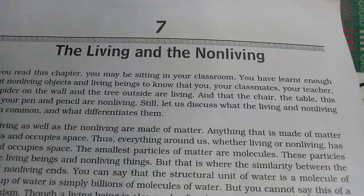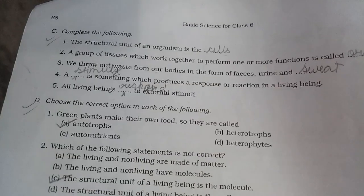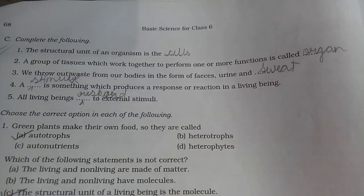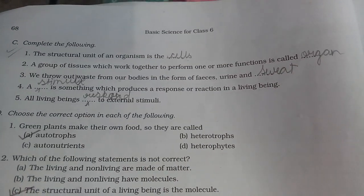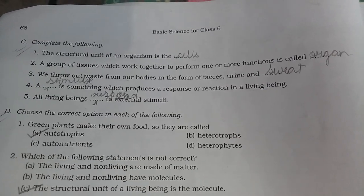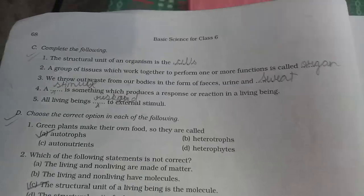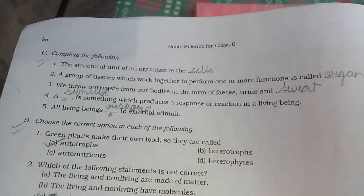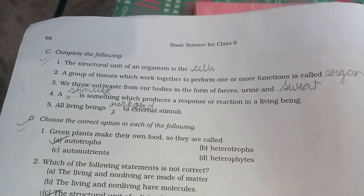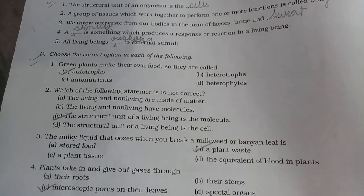Chapter 7: The Living and the Non-Living. The structural unit of an organism is a cell. A group of tissues that together perform a function is called an organ. We throw out waste from our body as faeces, urine, and sweat. A response or reaction of a living being to external stimuli — all living beings respond to external stimuli. Plants make their own food; they are called autotrophs.